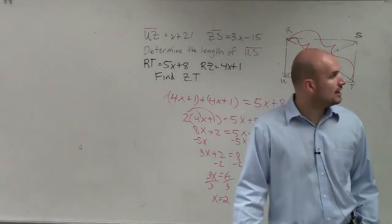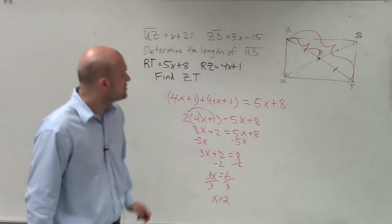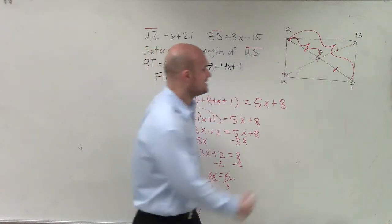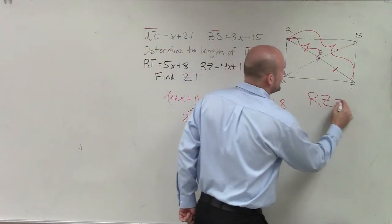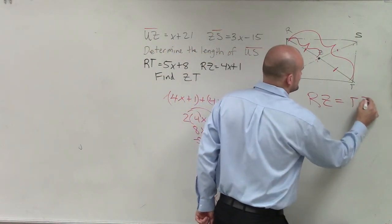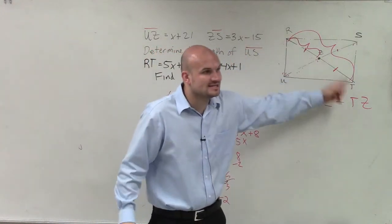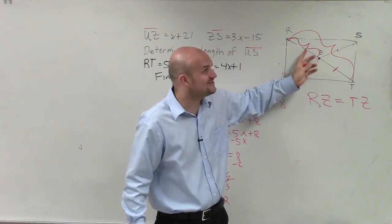So therefore, on this one, I have x equals 2. Right? So now, again, what we said, guys, is the side RZ is equivalent to TZ. Right? These are exactly the same. I know. Oh, shoot. It's almost time.